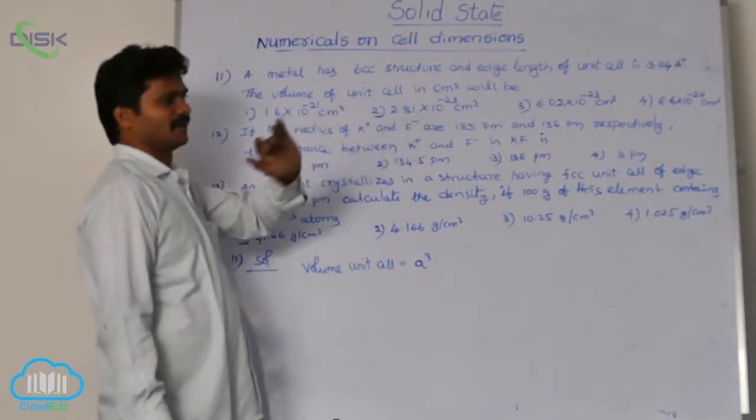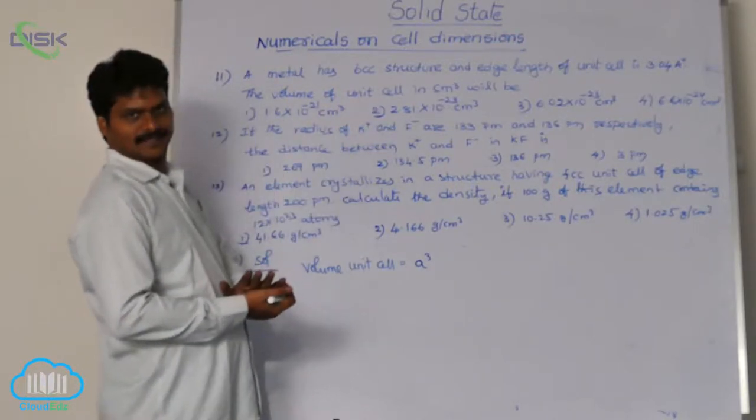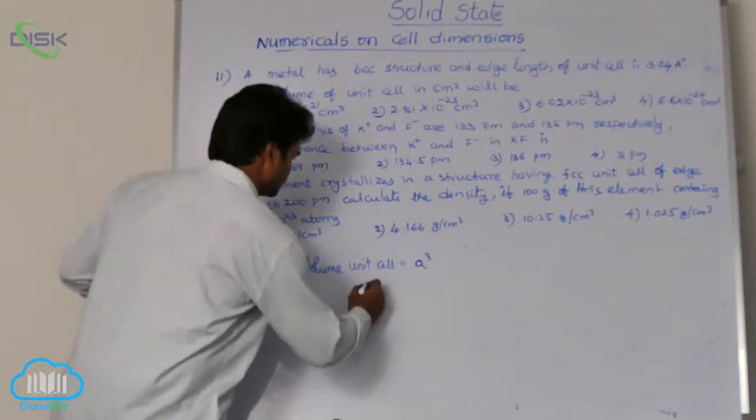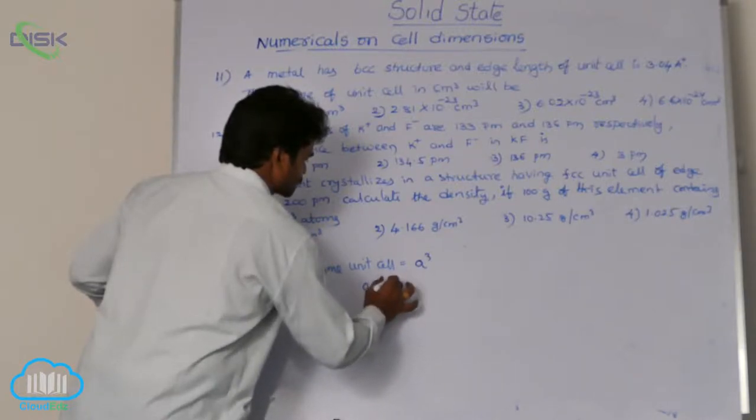But here, options are in centimeter cube. That is why, let us convert the edge length from angstrom units into centimeters. So here, edge length A value is given as 3.04 angstrom units.